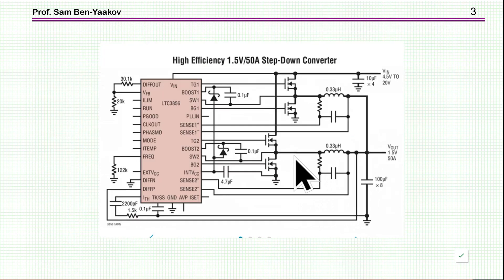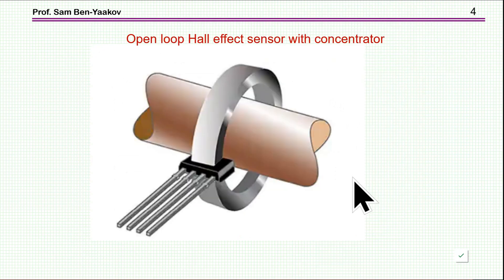Here we have another case, a different method. Here the current is measured by actually measuring the voltage drop on the internal resistance of the inductor by this network. As it turns out, if you choose correctly the resistor and capacitor, you have a replica of the current by the voltage across this capacitor, which is now fed to the controller.